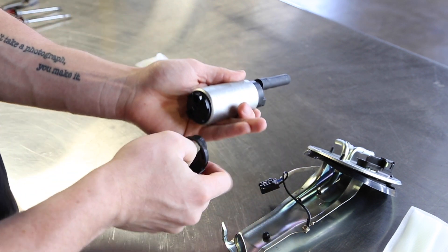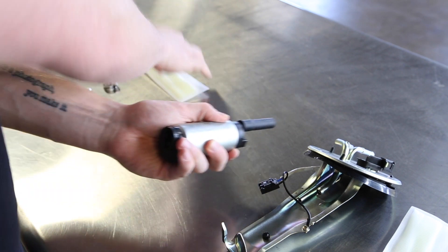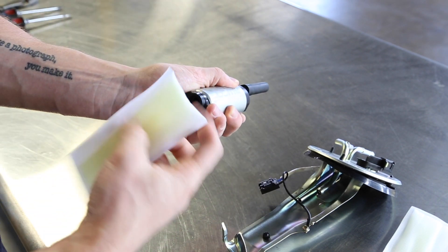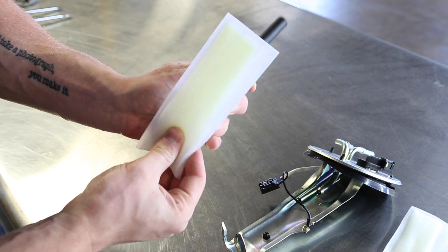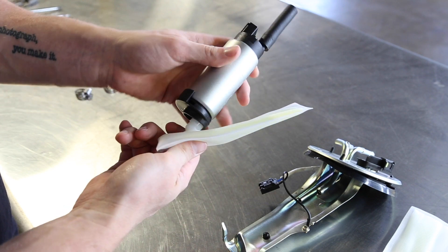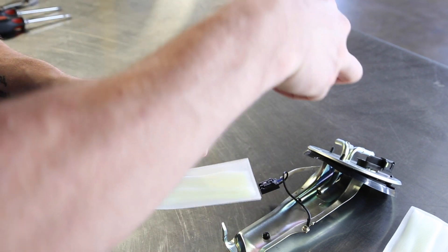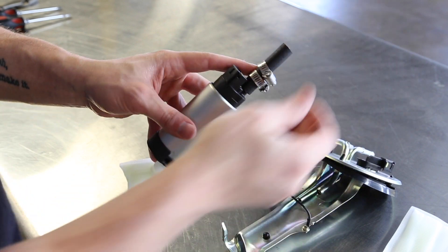Install the supplied fuel sock on the fuel pump with the fuel sock retainer. Slide the supplied hose clamps on the hose and then install the pump onto the assembly.